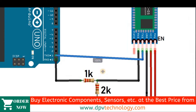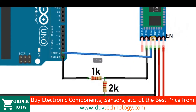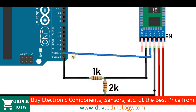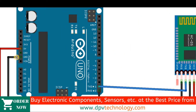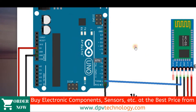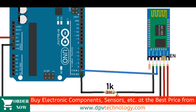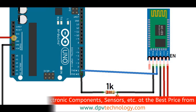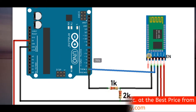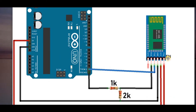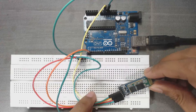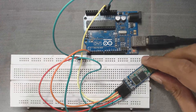Connect the TX pin of the Bluetooth module to the TX pin of the Arduino, then the GND pin of the Bluetooth module to the GND pin of the Arduino, then the VCC pin of the module to the 5V pin of the Arduino. Also, we have to connect the EN pin — that is the enable pin — of the Bluetooth module to the 5V pin of the Arduino. Here are our connections.